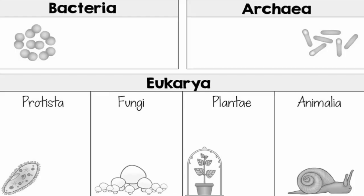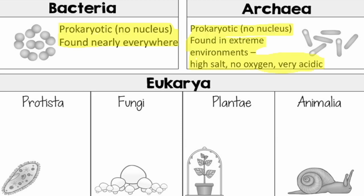Going to our worksheet, we have bacteria. There are two types: bacteria and archaea. Bacteria are prokaryotic — no nucleus — and found nearly everywhere. Archaea are also prokaryotic, meaning they do not have a nucleus. They're found in extreme environments like high salt, no oxygen areas, and very acidic environments.